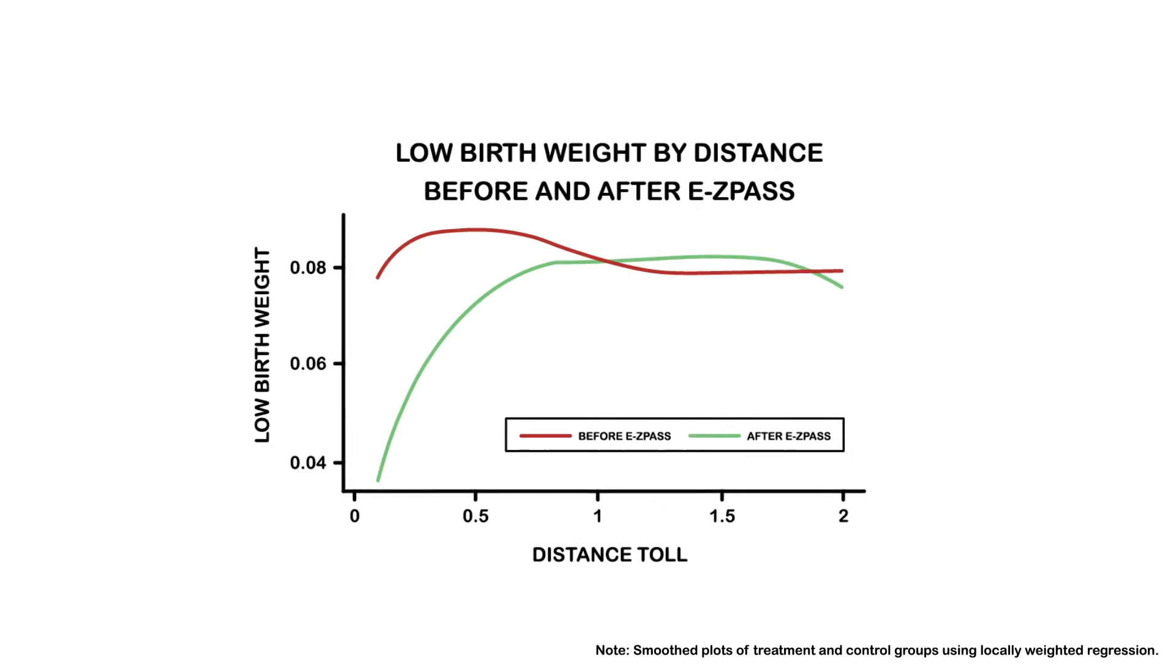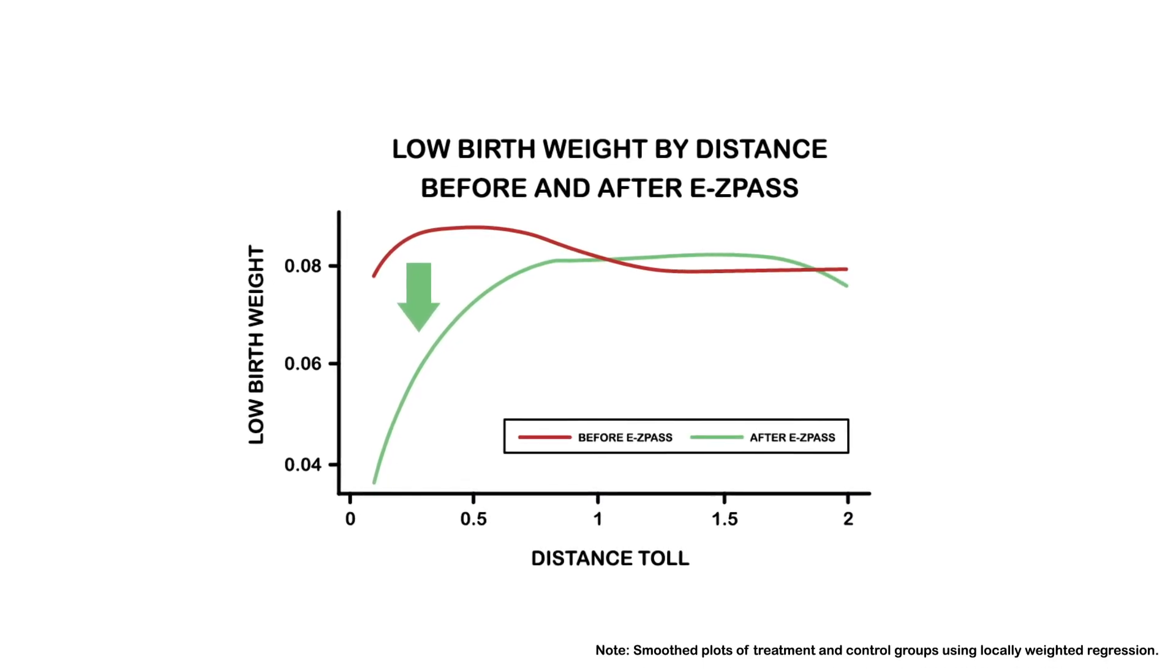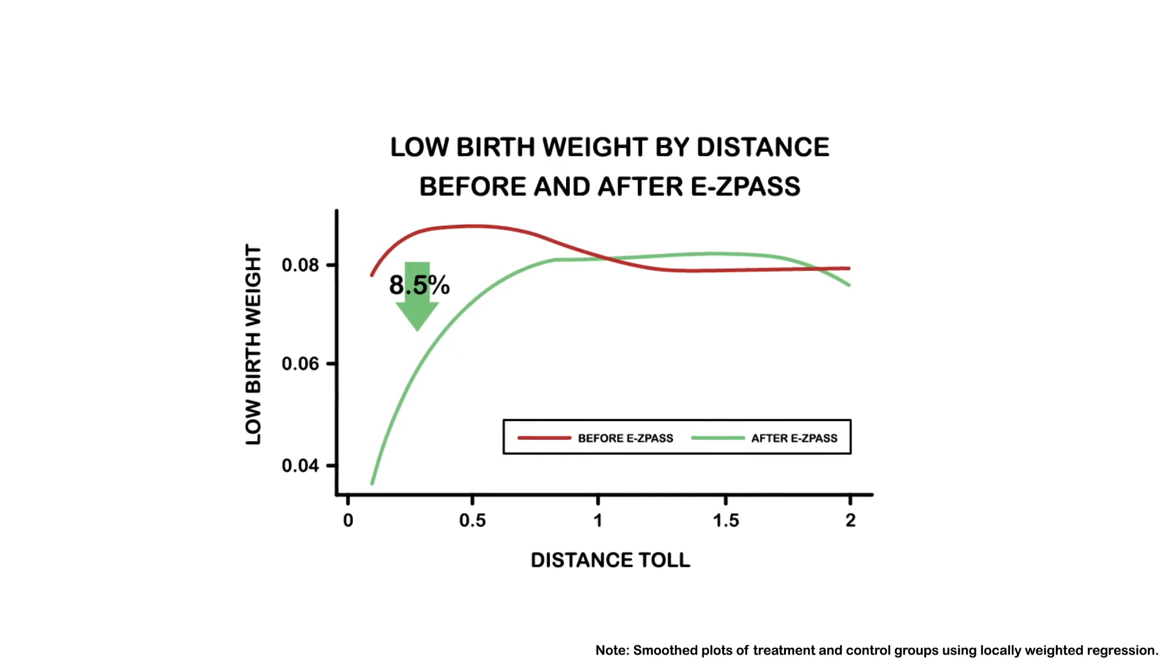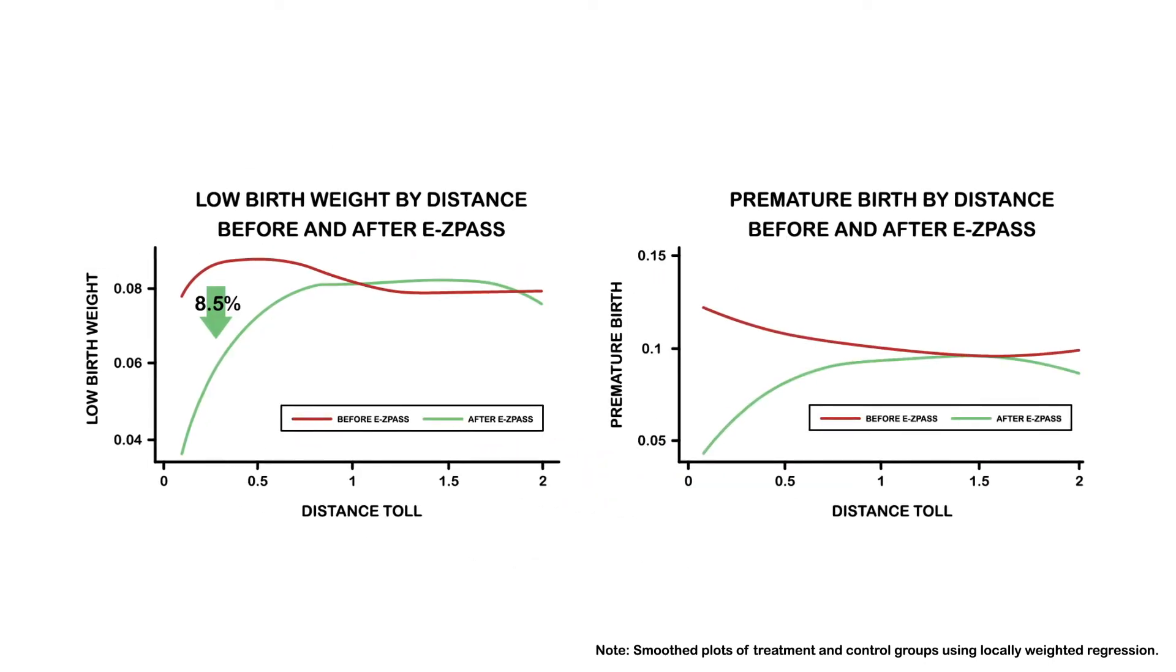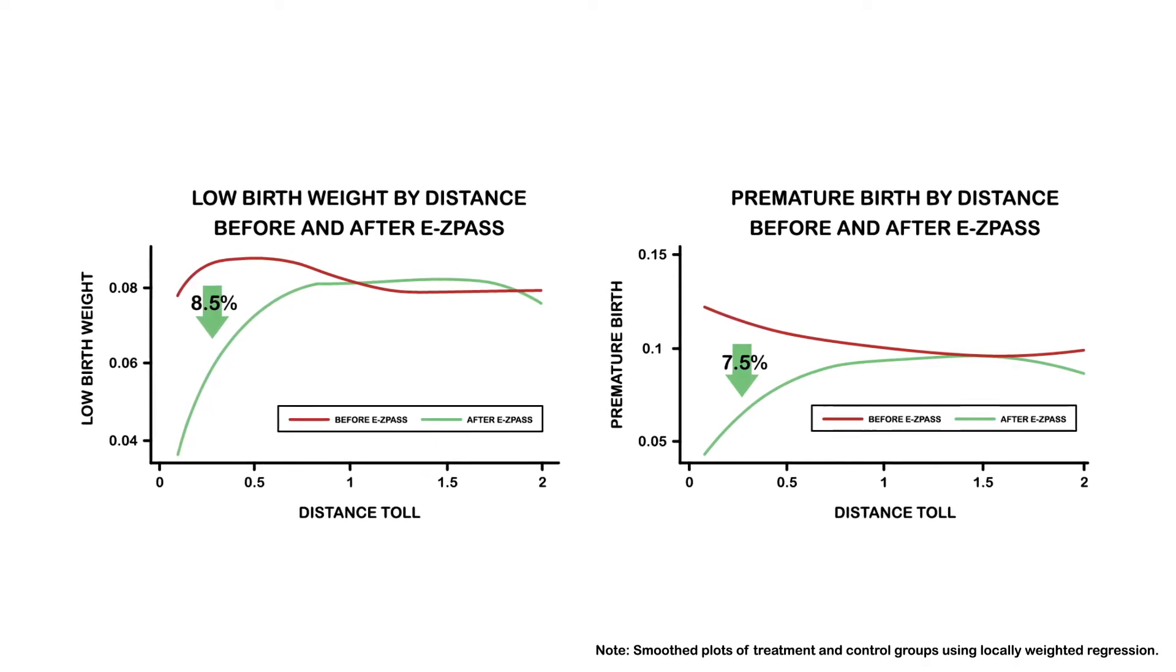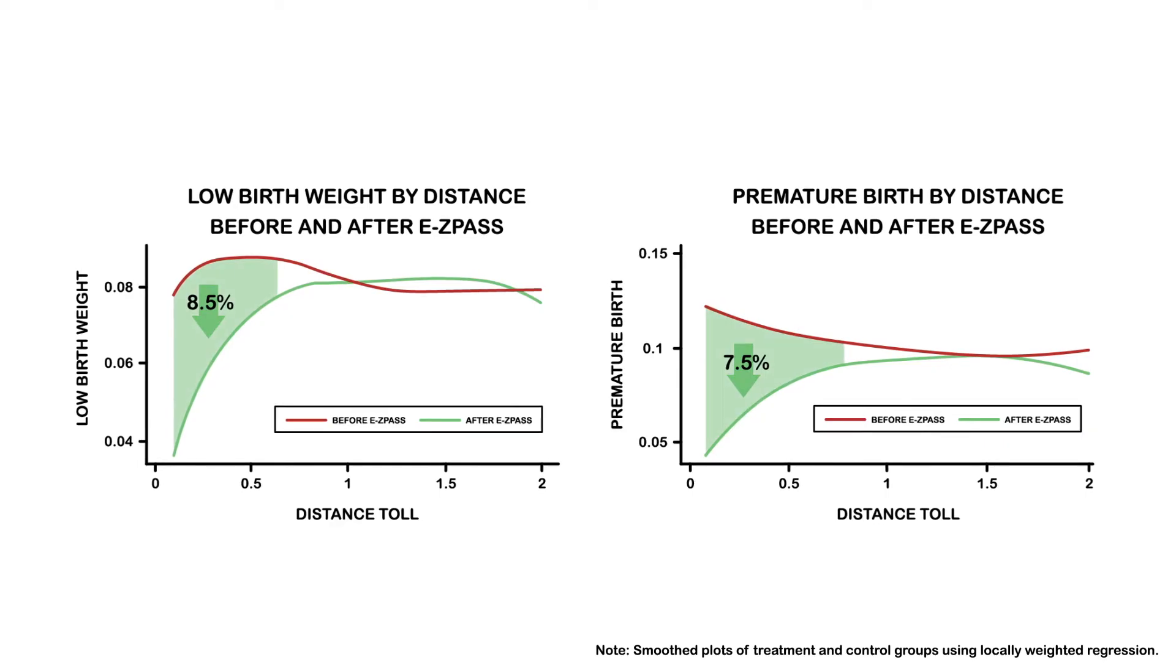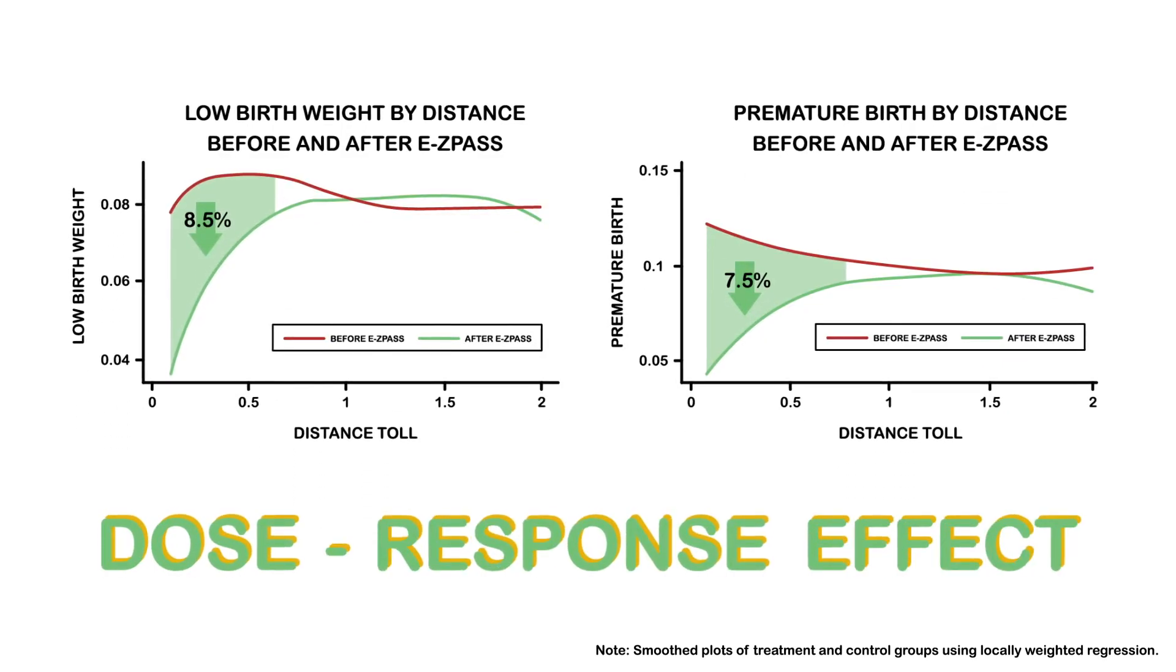Using this method, Currie and Walker found that the introduction of EZPass reduced low birth weight babies by about 8.5% and premature births by about 7.5%. They also found that the effects were largest for the infants born closest to the tollbooth, a dose-response effect.